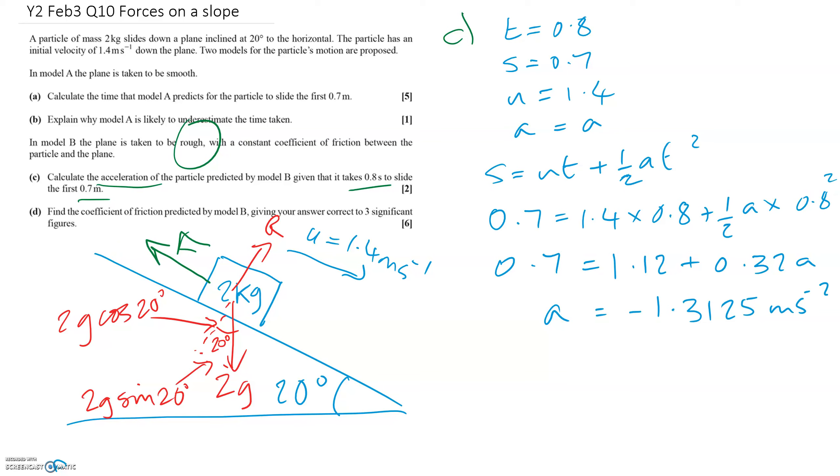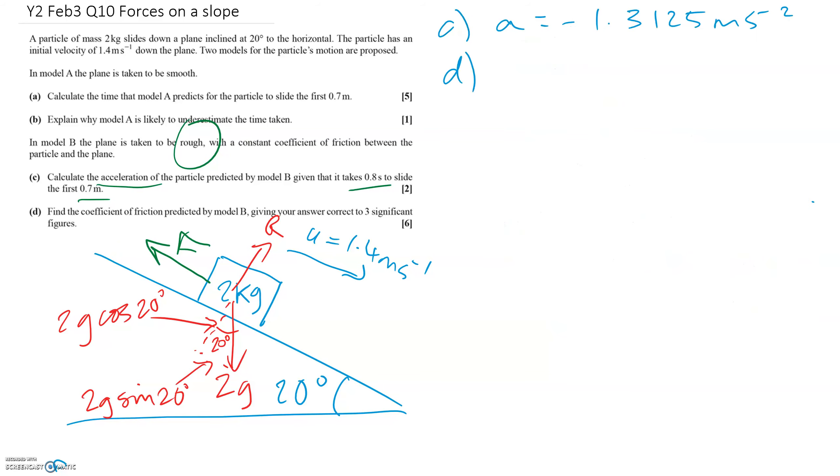But I'm going to need a bit more space for part D. So let's clear this up a bit. In part D then we want to find the coefficient of friction, which means we're going to need to use F equals mu R at some point. But we can't find the coefficient of friction until we know F and we know R.